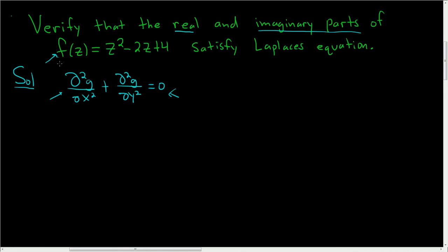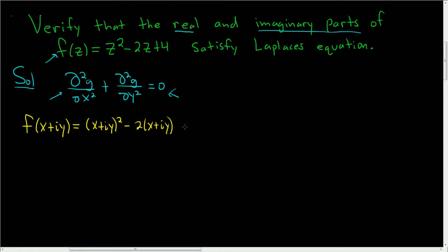First we'll find the real and imaginary parts by writing z as x plus iy. So we have f of x plus iy, and that's equal to x plus iy squared minus 2 times x plus iy plus 4.